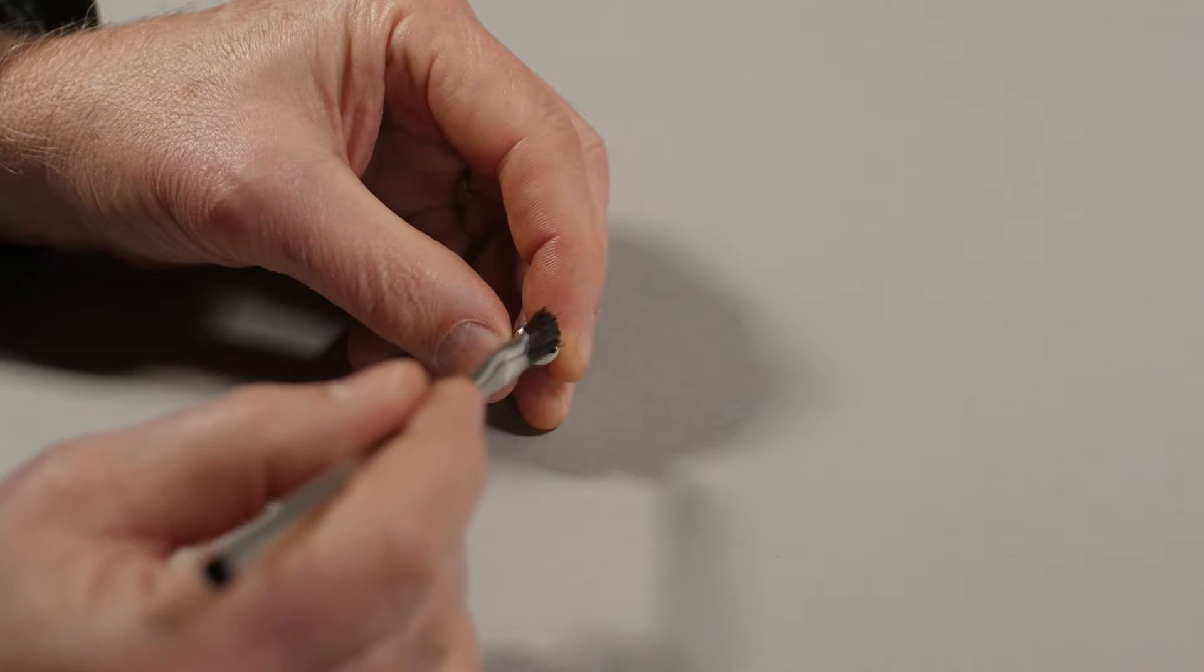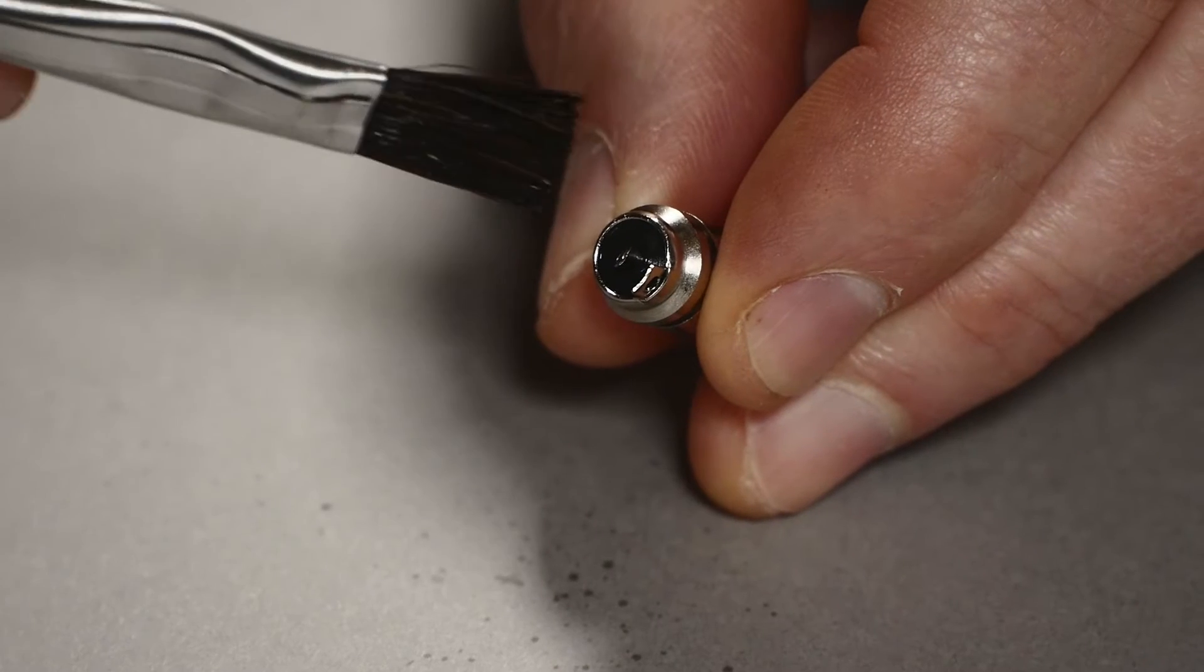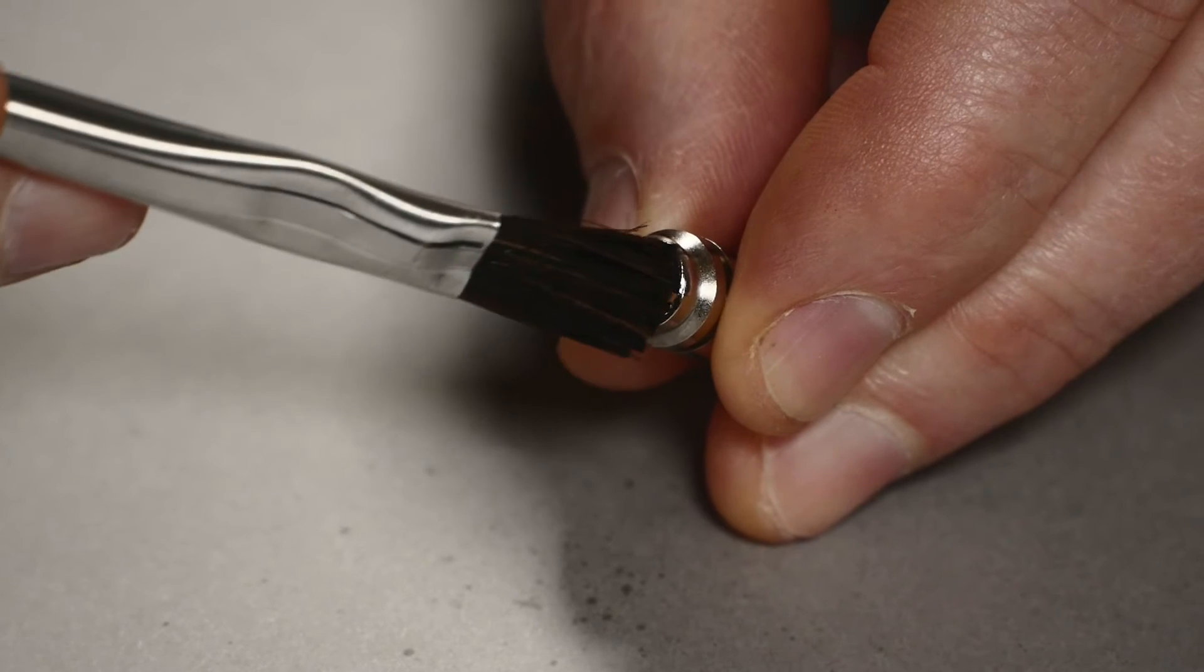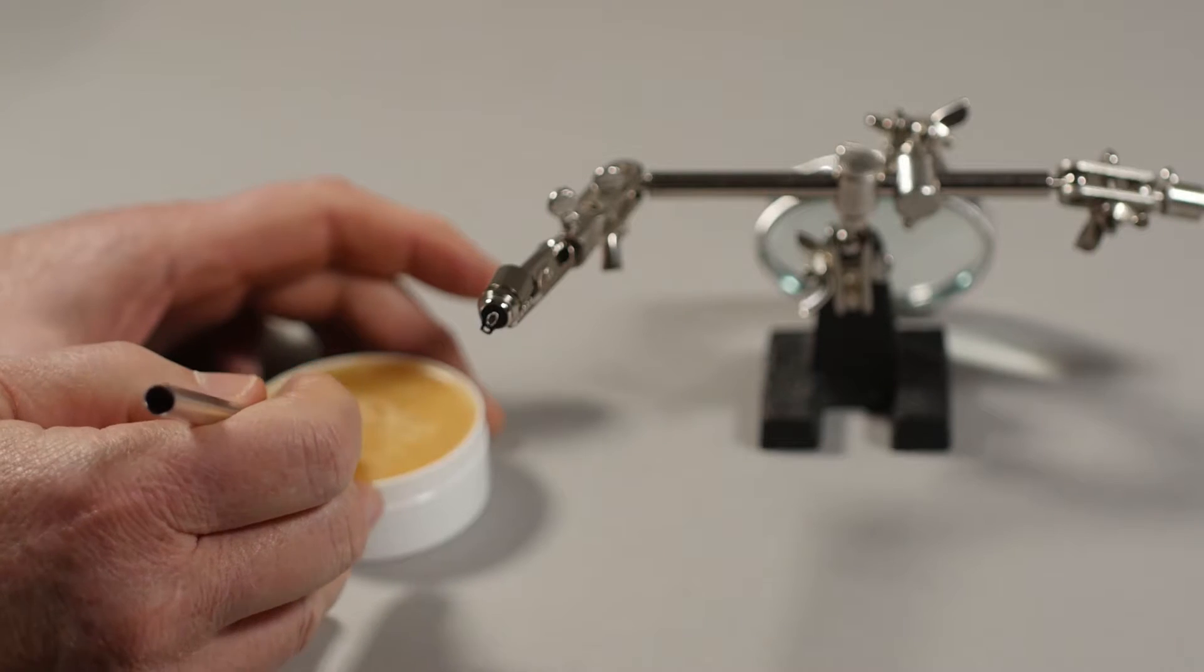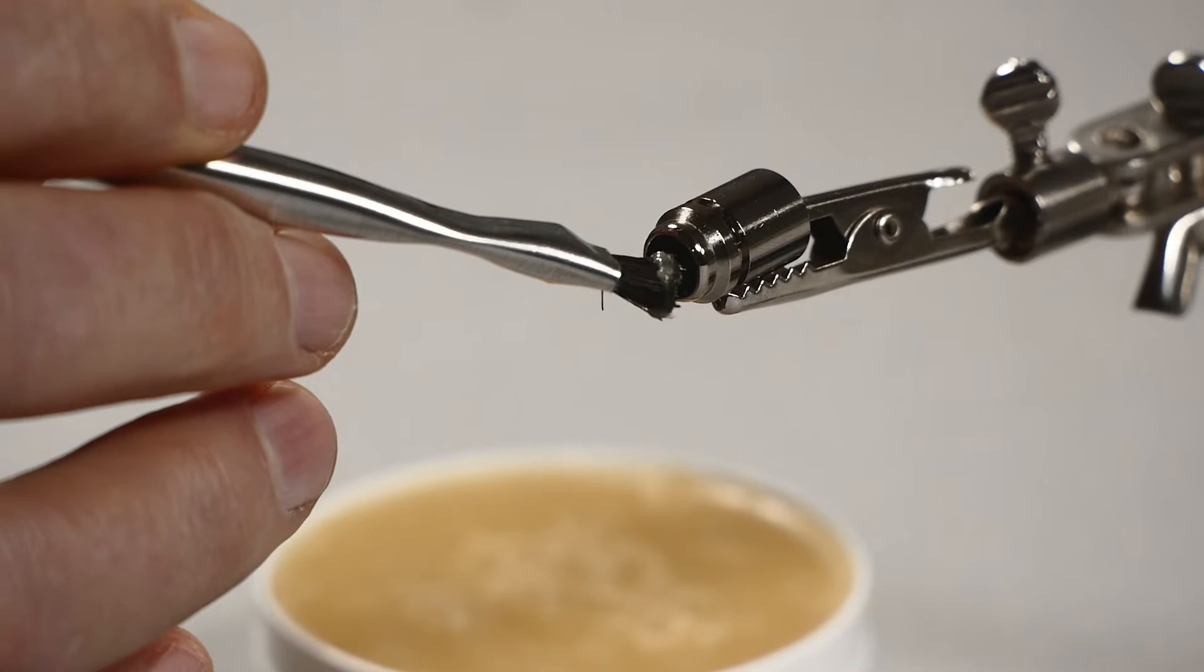Clean the connector solder tabs with isopropyl alcohol to eliminate any oxidation or residue buildup. Apply solder paste to each connector solder tab for added cleaning.